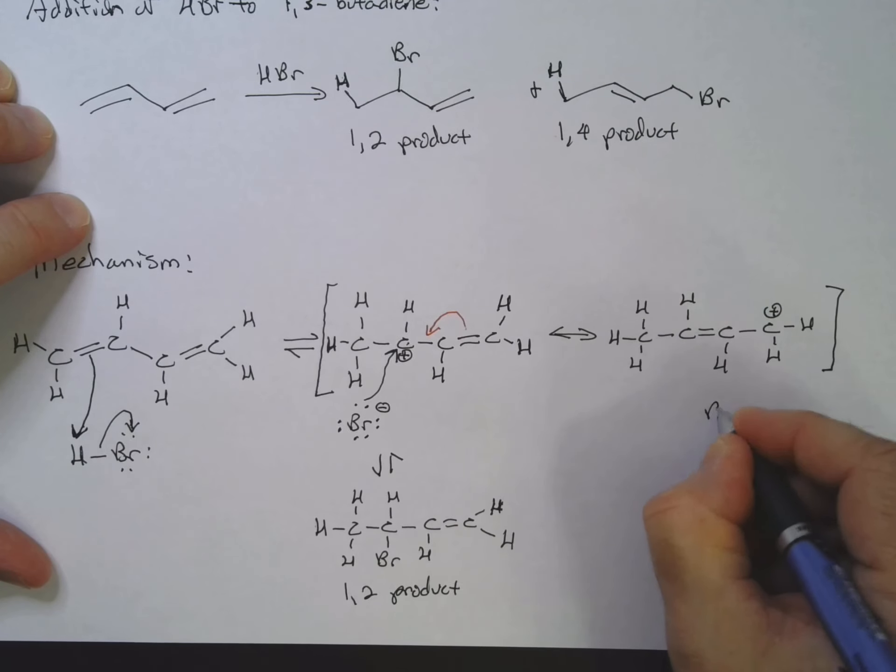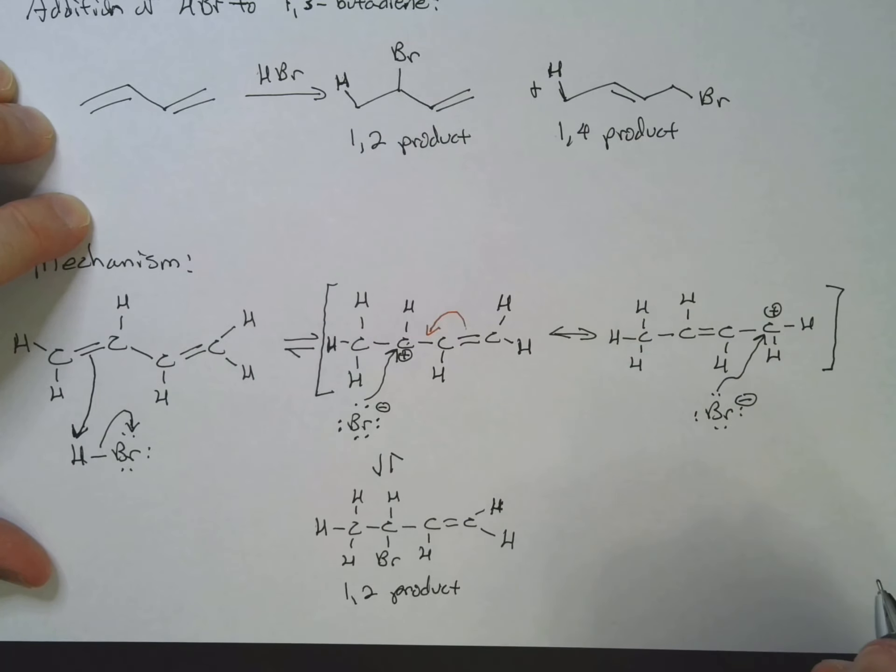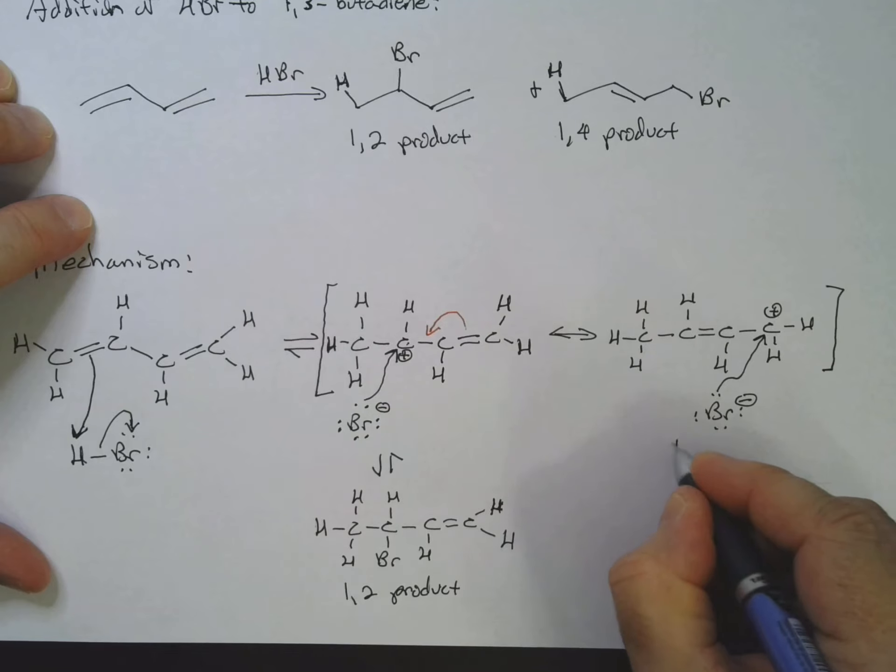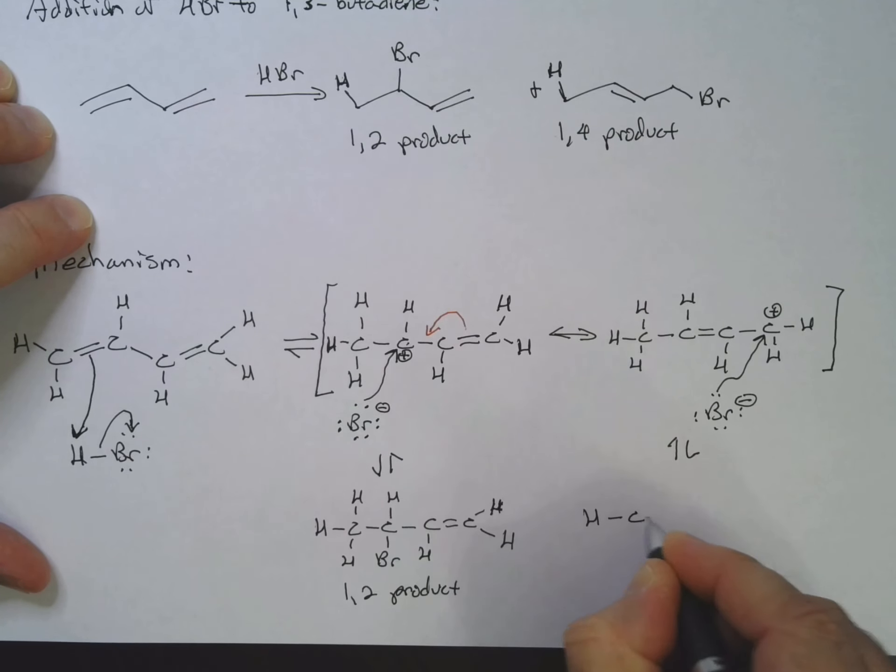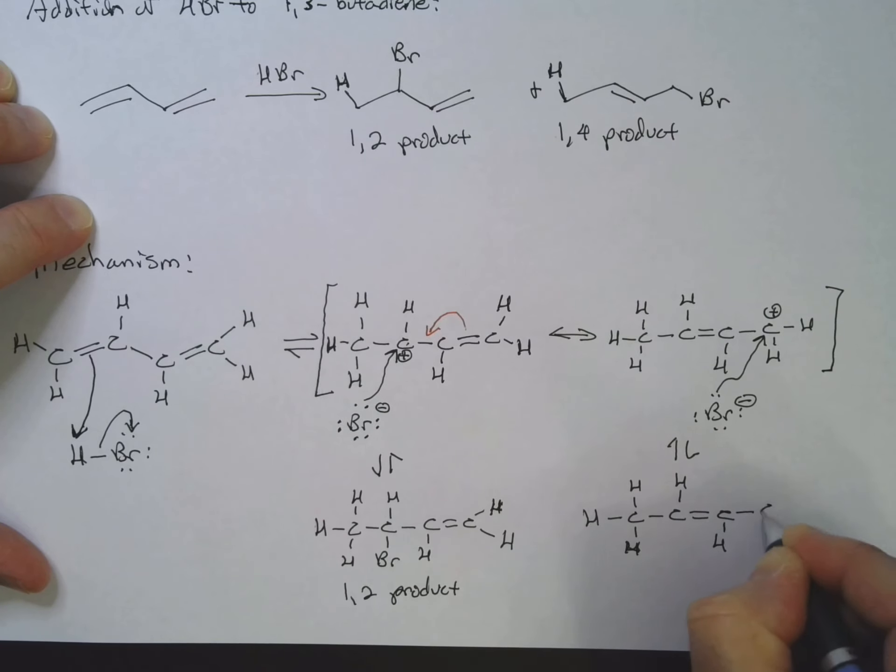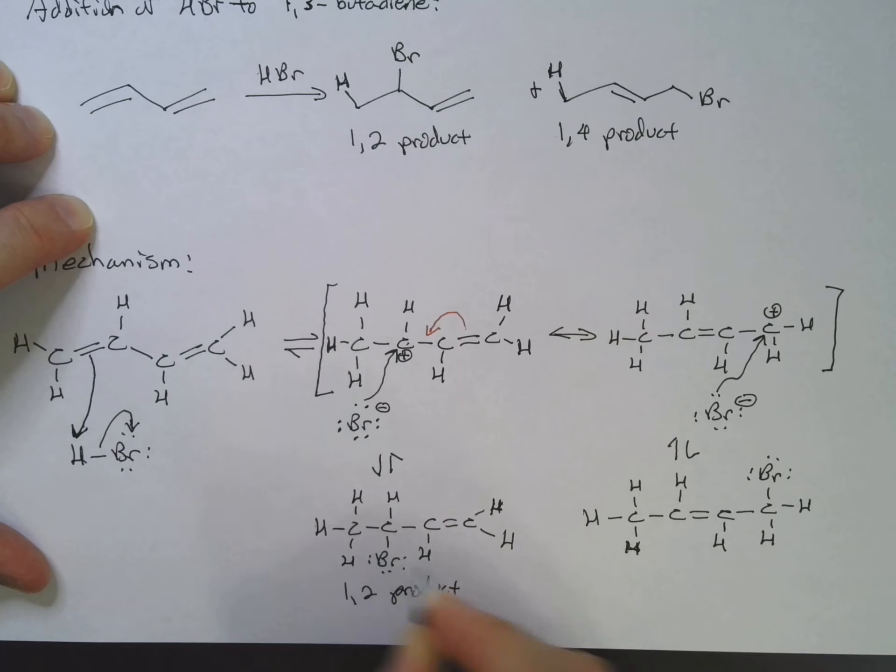So now my Br minus—don't forget the lone pairs—Br minus can go ahead and add to the carbon there. And now I'll have H-C-C-H-H-H, H double bond C-H, C-H-H, H-Br. And this is my 1,4 product.